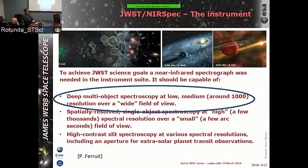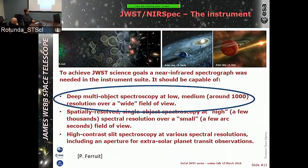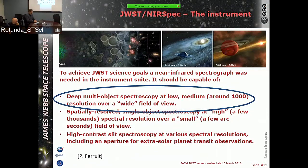Many of you may have seen the introductory talk that Pierre Ferri, the instrument PI at ESA, gave back in March — sort of an overview of all the capabilities of NIRSpec. I'd like to start with one of the slides he showed, covering the high-level science goals of JWST. For NIRSpec in particular, one of our high-level science goals is to obtain multi-object spectroscopy at low and medium spectral resolution across a wide field of view.